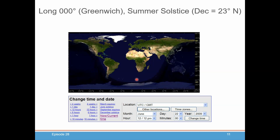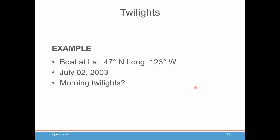At the June solstice it's the opposite: some latitudes never have nighttime, while others always have nighttime. So again, very dependent on latitude. For our example, the boat is at 47 degrees north, longitude 123 degrees west, on July 2nd, 2003, and we want to take some sights in the morning. So we need to figure out that sweet spot time between civil and nautical twilight.